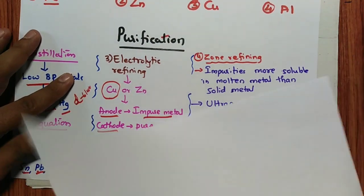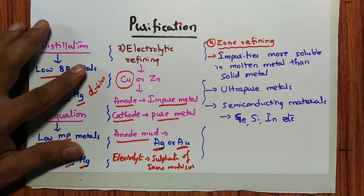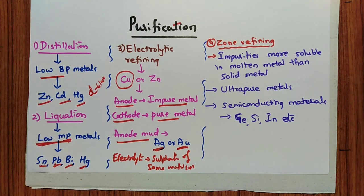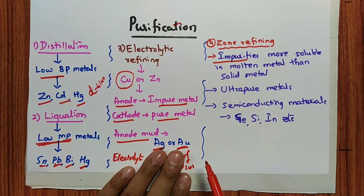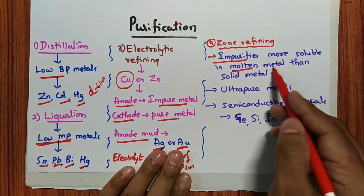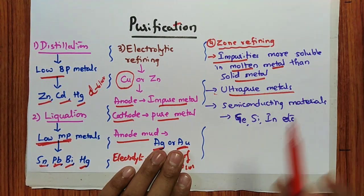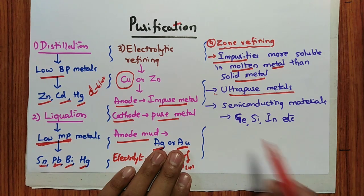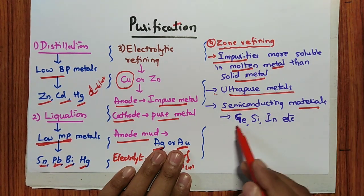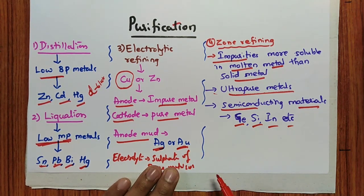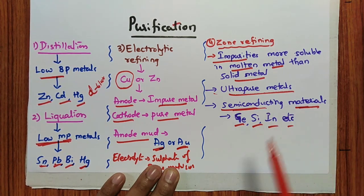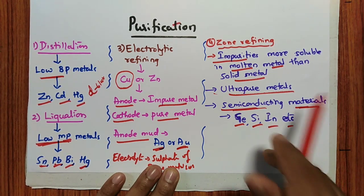Fourth method: zone refining — used when impurities are more soluble in molten metal than in solid metal. Ultra-pure metal is obtained. Semiconducting materials such as germanium, silicon, gallium, and indium can be purified by this method.